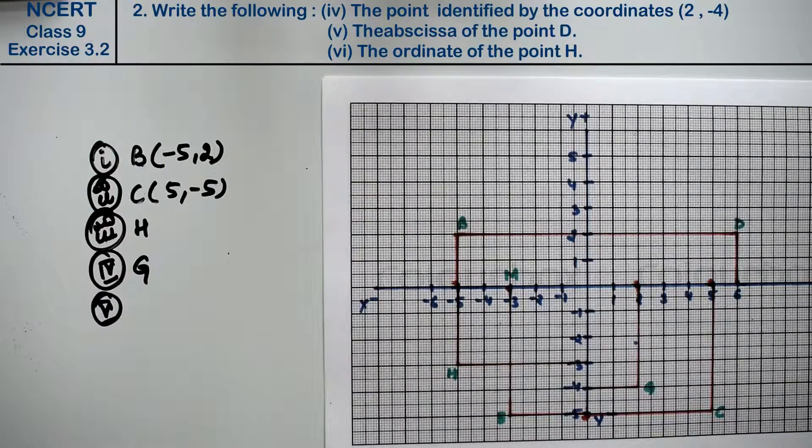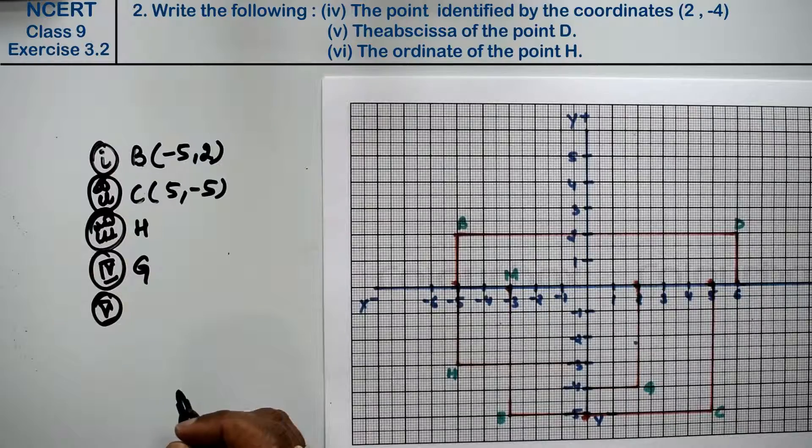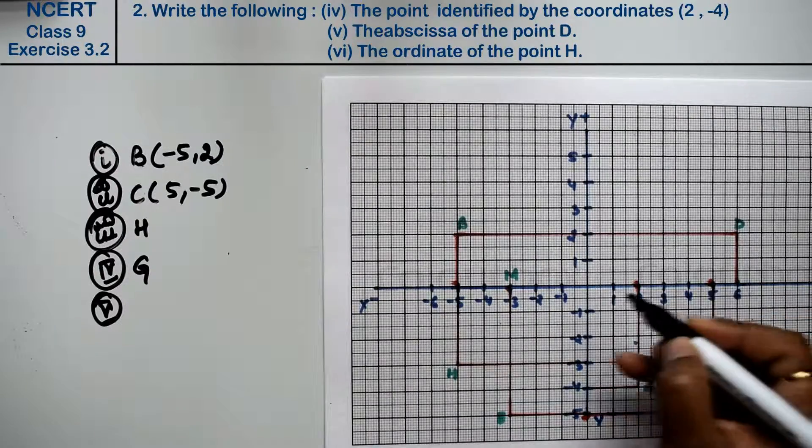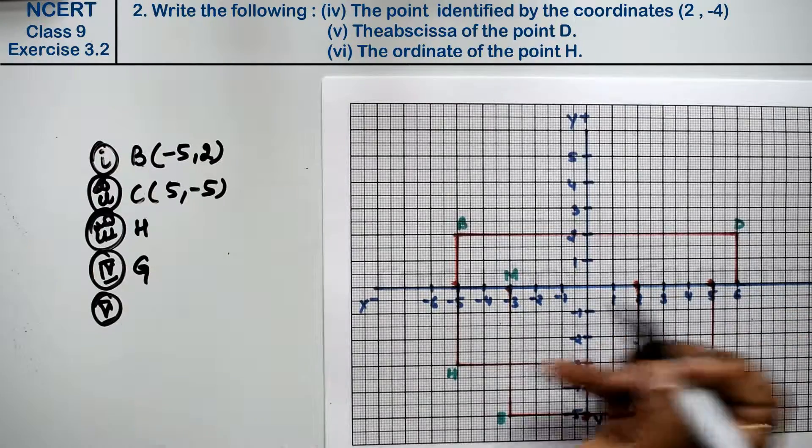Let's do fifth part. Fifth part is the abscissa of the point D. The abscissa means, friends, which x-axis value of the point? That is 6.